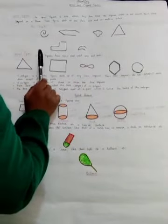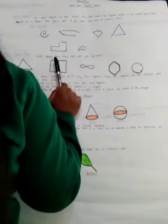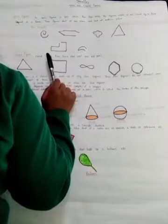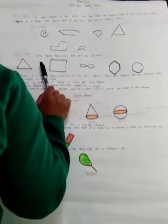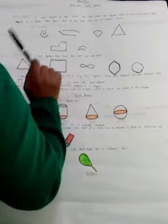Geometry comes from the Greek word. Geo means earth and metron means measurement. Therefore, Geometry means measurement and shape on the earth.